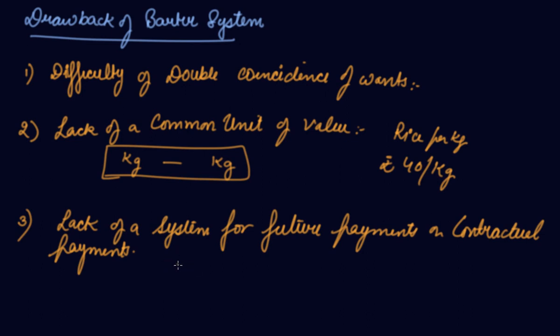So what will happen? You will not be able to exchange goods for goods. So future payments were not possible or contractual payments were not possible. This was the lack of system for future payments or contractual payments. But now what can happen? You can take loans, you can have outstanding payments.